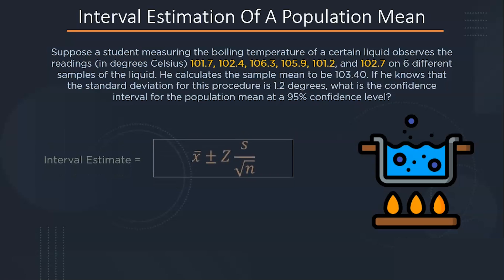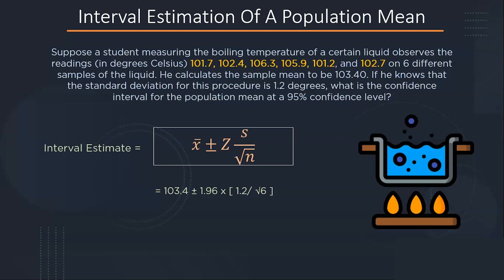So using this formula of interval estimate x bar plus minus z into s by root n, we will find the confidence interval. Here, x bar is 103.4 and z value is 1.96 corresponding to 95% confidence interval. And standard deviation is 1.2 divided by root 6 which is the sample size. So calculating, we will get the value to be 102.47 and 104.33 which shows that it is 95% certain that our population parameter lies between this confidence interval.